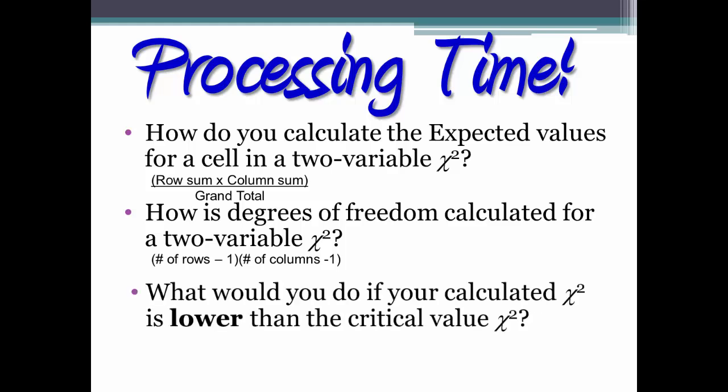And what would you do if your calculated chi-square is lower than the critical value chi-square? You should be accepting the null hypothesis and rejecting the alternative chi-square hypothesis, concluding that there are no significant differences between what you observed and what you would have expected to see if the data were evenly distributed.